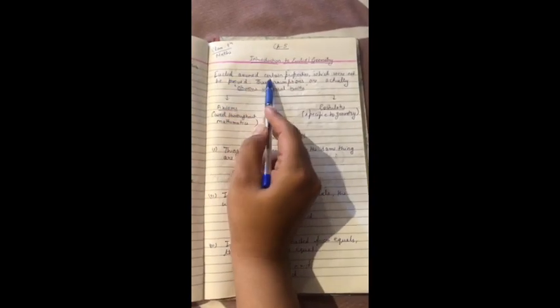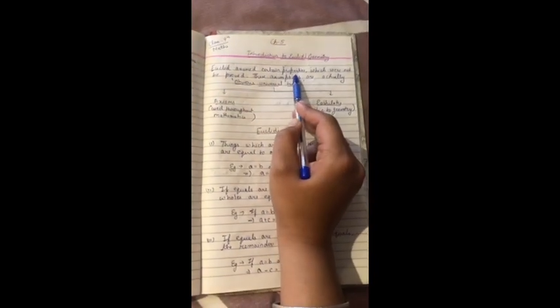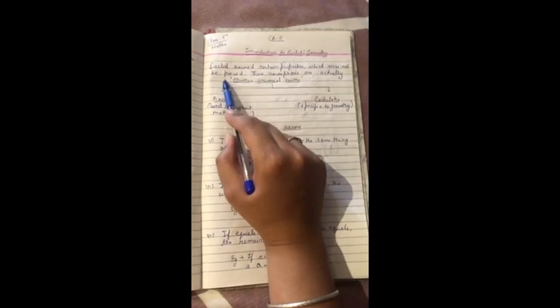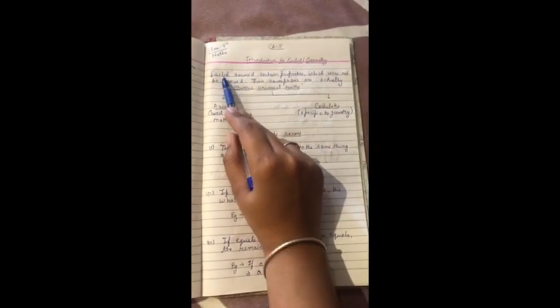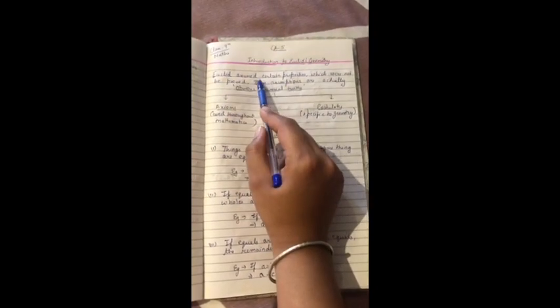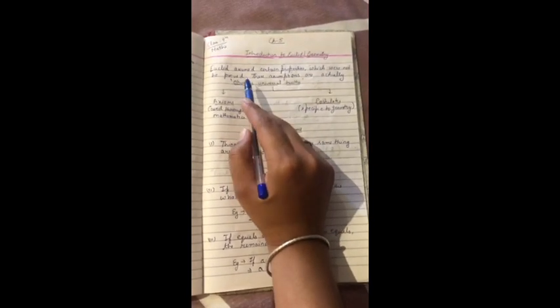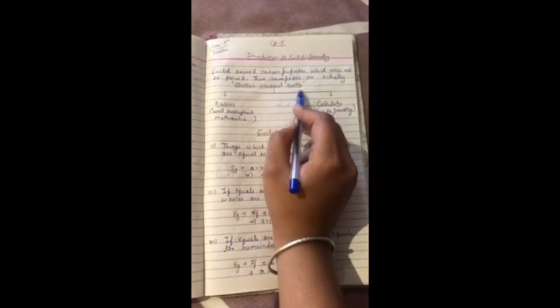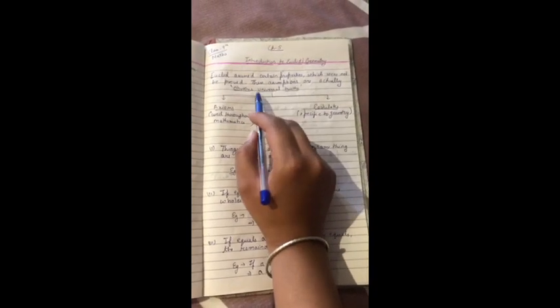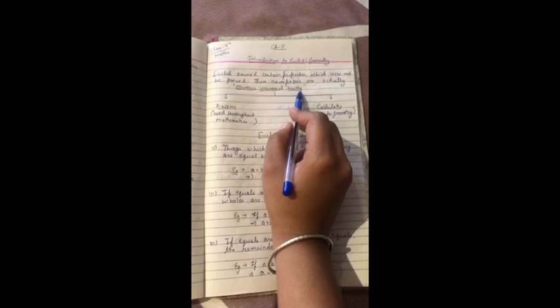Euclid assumed certain properties which were not to be proved. Euclid assumed properties which we don't need to prove, which we call universal truth, which is actually fact. We call them universal truth.